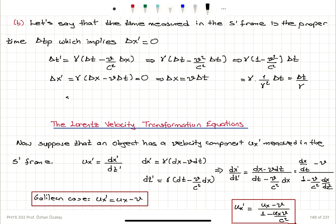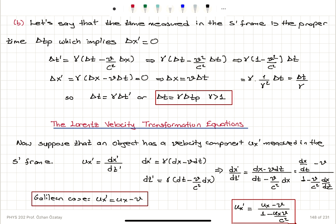We find that delta T equals gamma times delta T prime, or delta T equals gamma times delta Tp, the proper time interval. Since gamma is greater than 1, the measured time interval in S is greater than the proper time interval. So we obtain time dilation, because according to the S reference frame, this clock is moving with velocity V together with the S prime reference frame, and therefore we see it run more slowly.